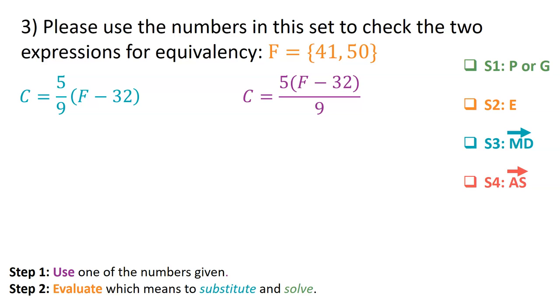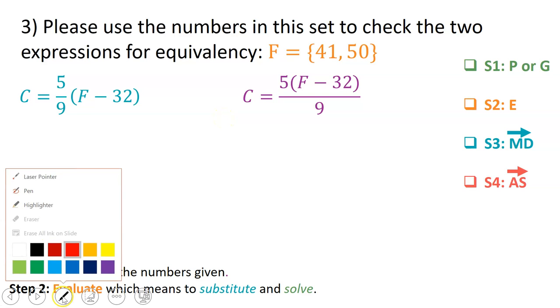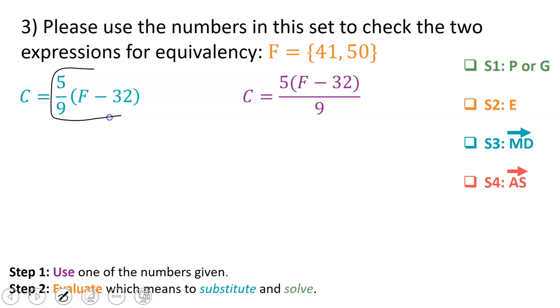I'm trying to show you what it might look like on the EOG when they give you a set of numbers to plug in for the variable. What this is saying is that they want us to plug in 41 for the variable F, or we could plug in 50 for the variable F. We're trying to figure out if this expression is equivalent to this expression.